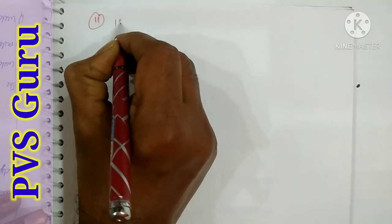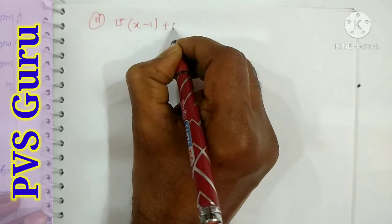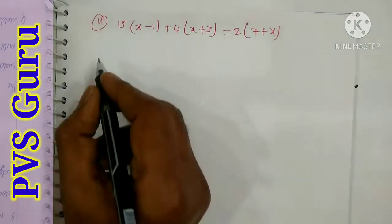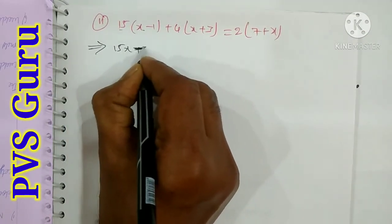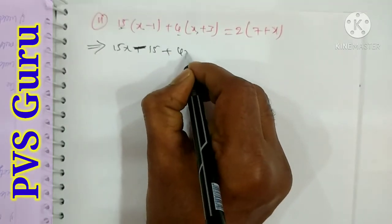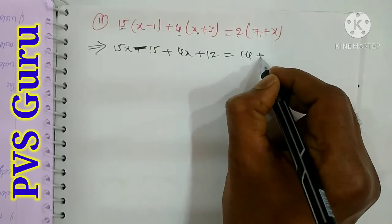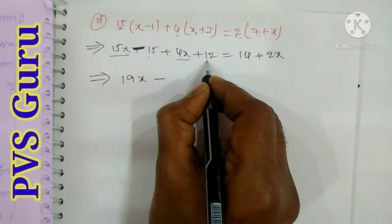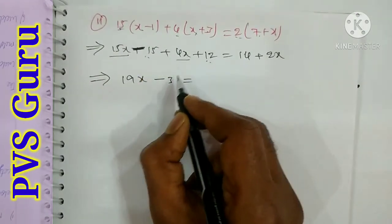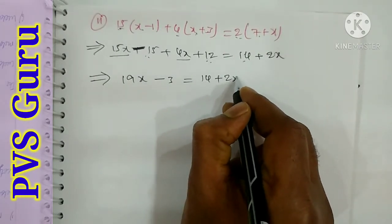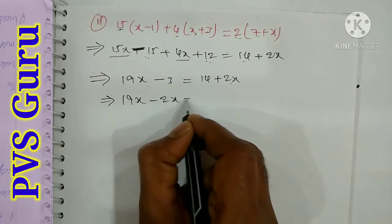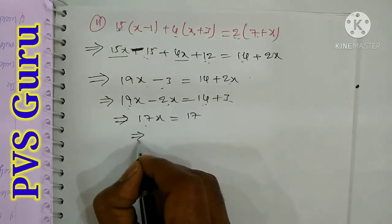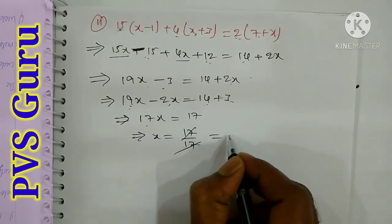Question number 11: 15 into (x minus 1) plus 4 into (x plus 3) is equal to 2 into (7 plus x). Expanding: 15x minus 15 plus 4x plus 12 equals 14 plus 2x. Simplifying left side: 19x minus 3. Taking 2x left and minus 3 right: 17x equals 17, so x is equal to 1.